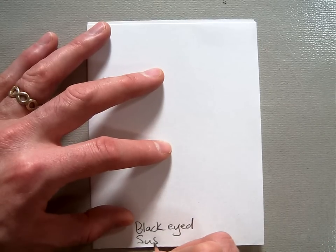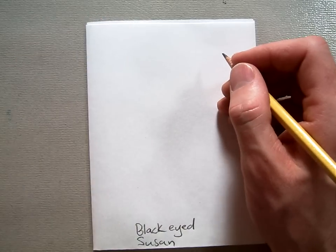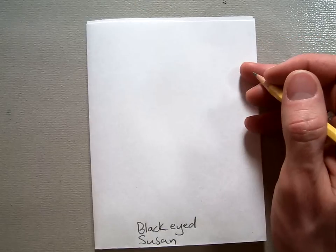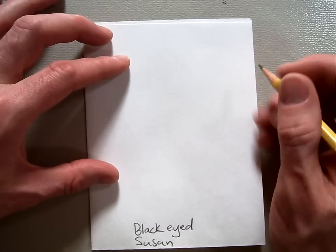And it's called a black-eyed Susan because the center gumdrop shape is nearly black, it's like super duper dark brown.